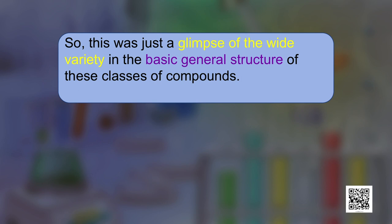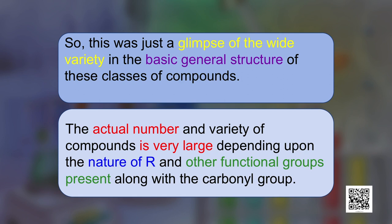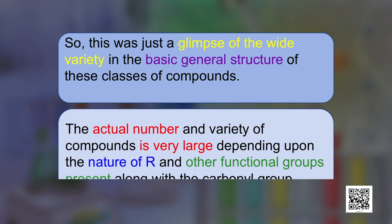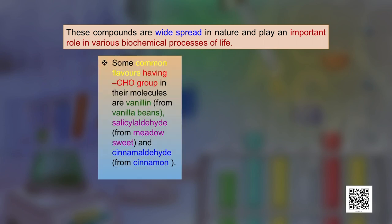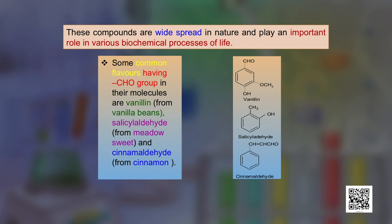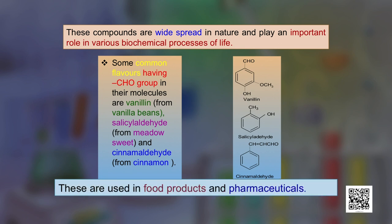The actual number and variety of carbonyl compounds is very large, depending on the nature of R and the functional group present. These compounds are very widespread in nature and play an important role in various biochemical processes. Some common flavors having a CHO group in their molecules are vanillin from vanilla beans, salicylaldehyde from Mero sweet, and cinnamaldehyde from cinnamon. These are used in food products and pharmaceuticals.